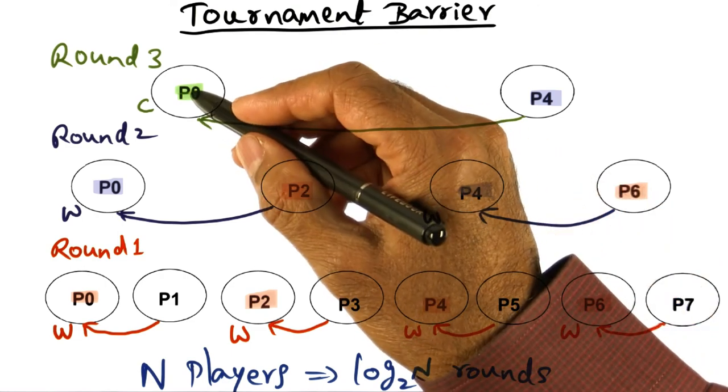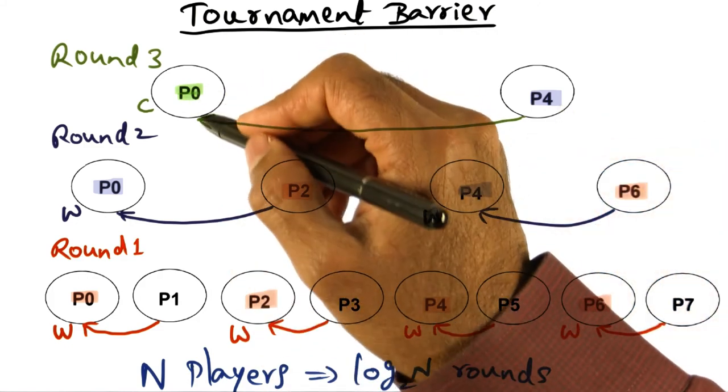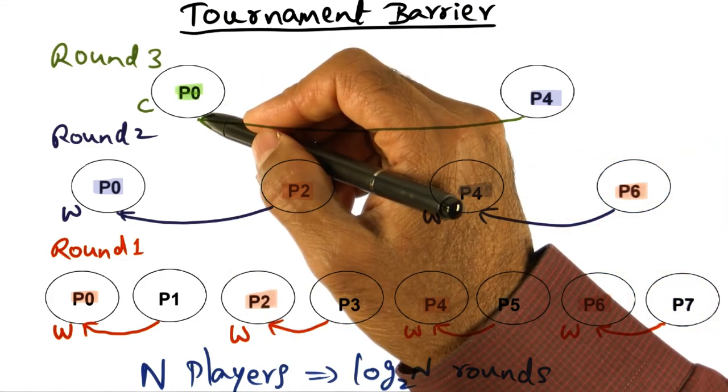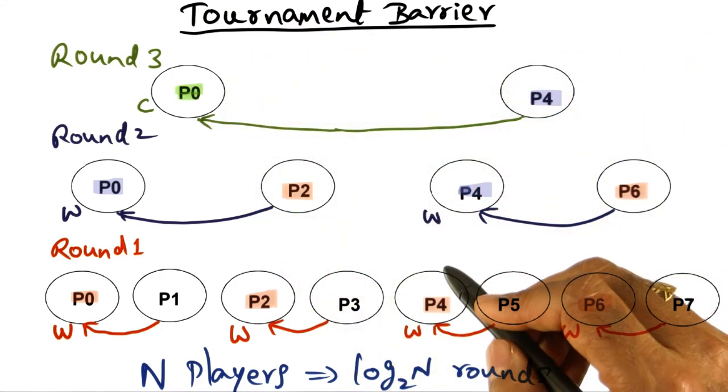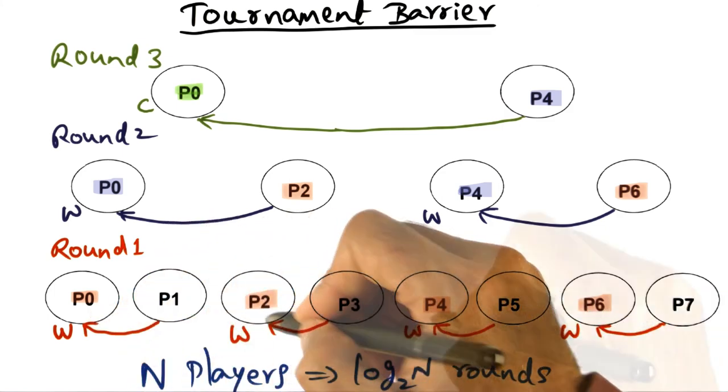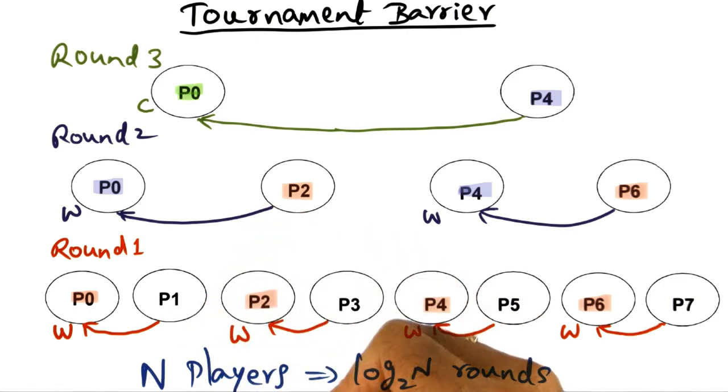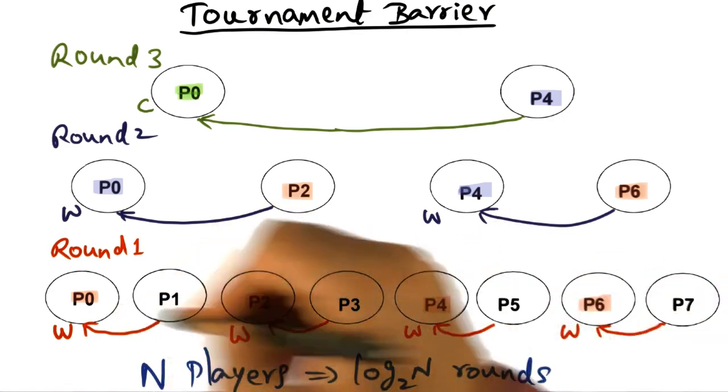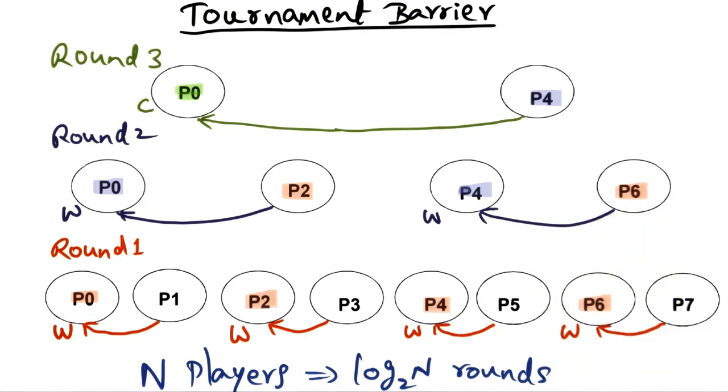So in this case, P0 is our lucky guy who wins the tournament. And so he's the champion. P0 is going to be waiting on a statically determined location where P4 can come and signal that P0 has won the tournament. So again, the important thing that I want you to get out of this particular arrangement is the fact that the spin location for each of the processors that is waiting on the other guy is statically determined at every level. So this is the first round, the second round, and finally the championship round.